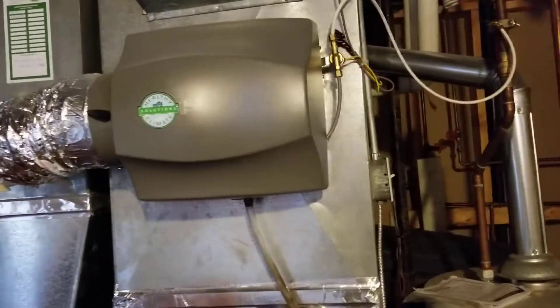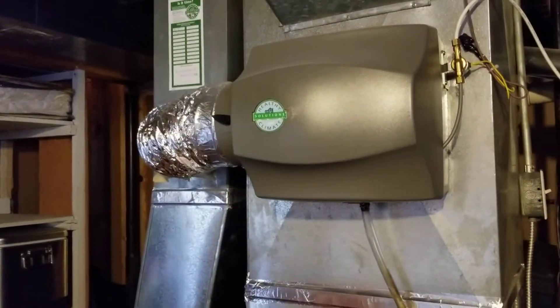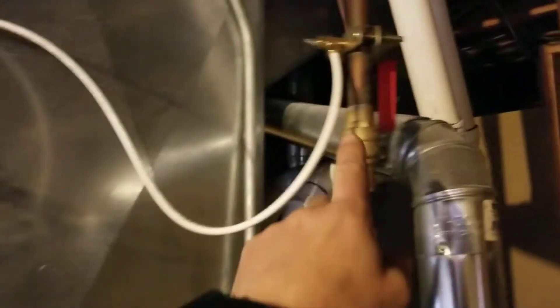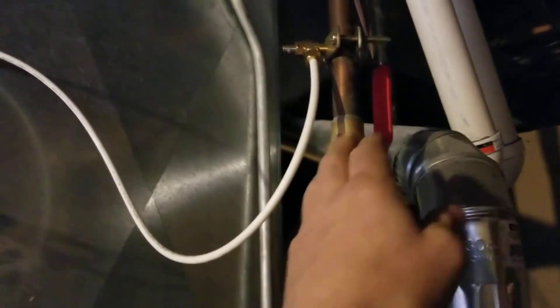Essentially, when you've got a humidifier that adds moisture to your home, water is supplied to this humidifier through a line, in this case off the hot water tank.